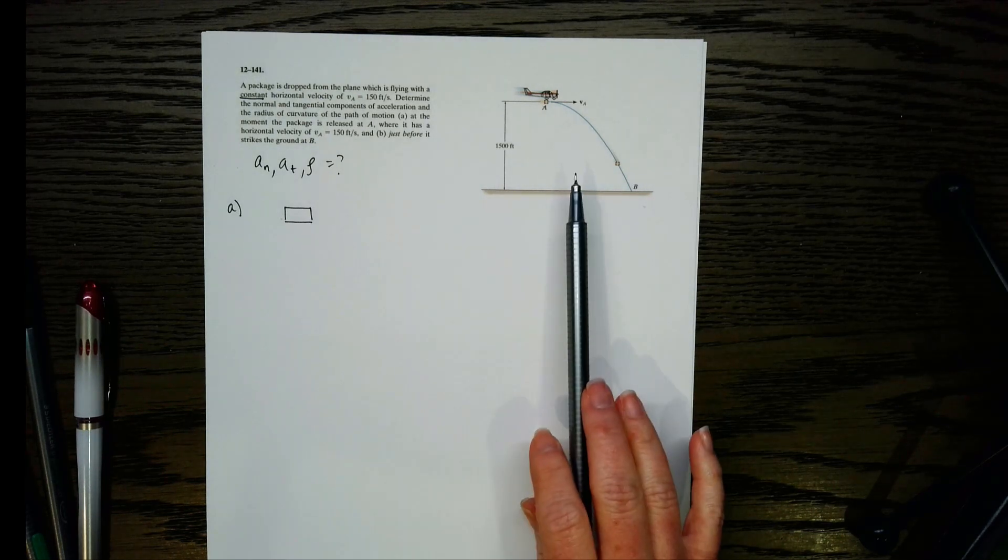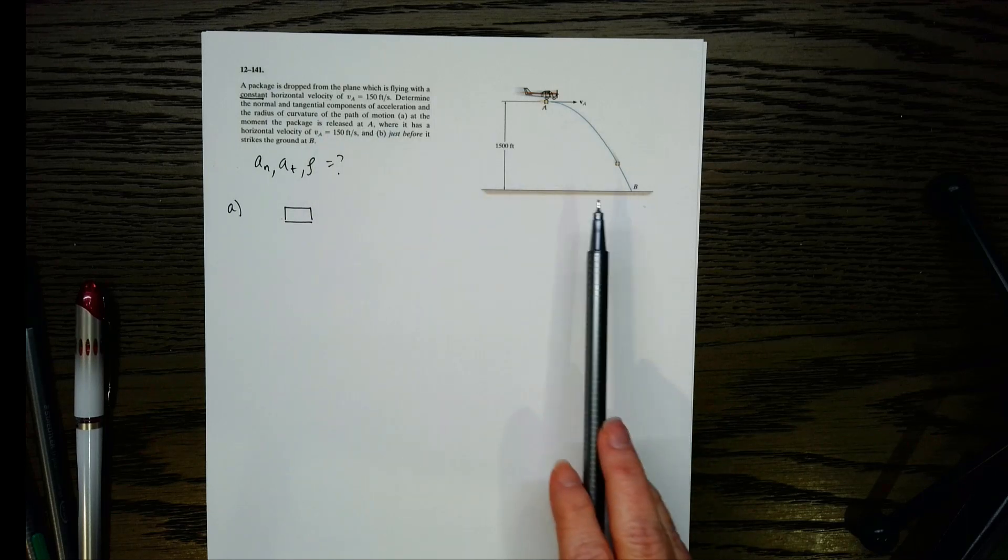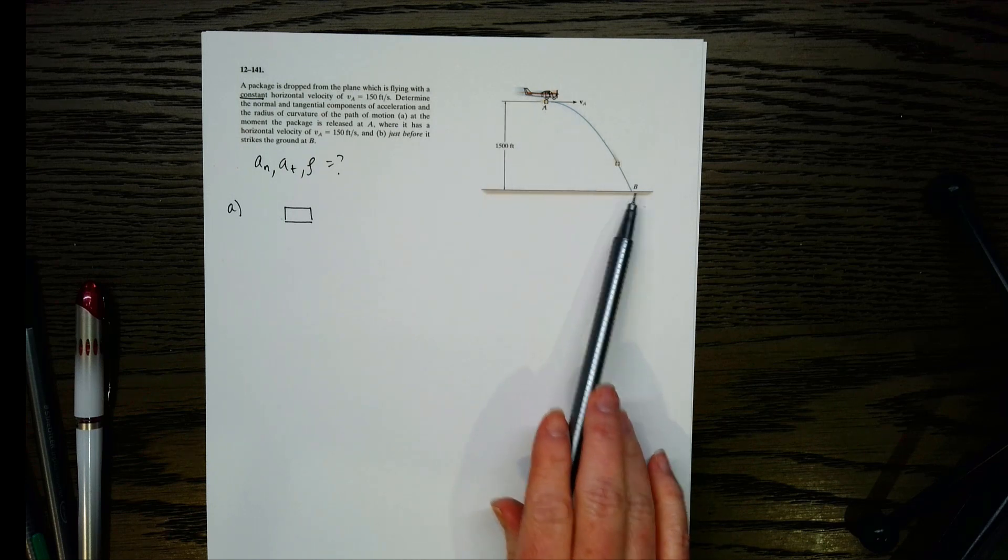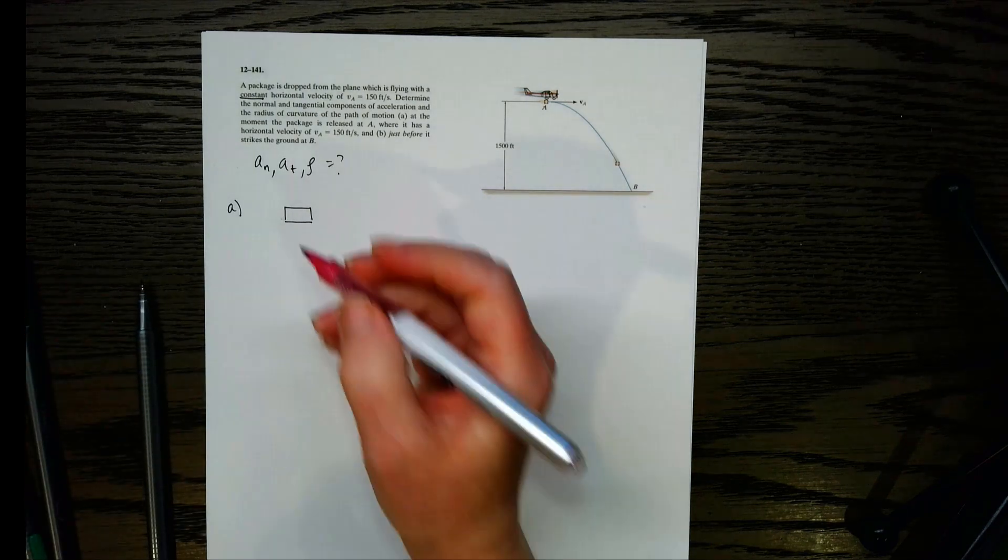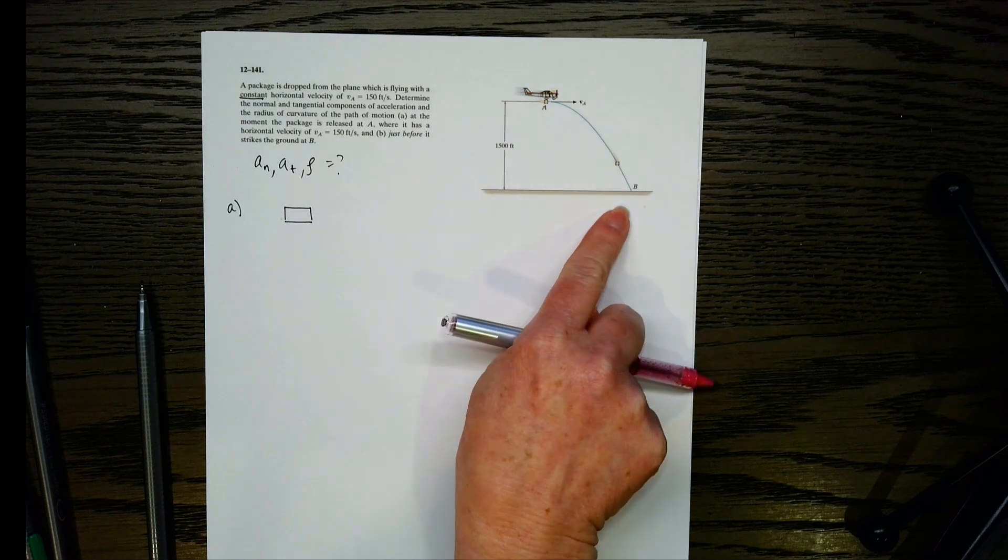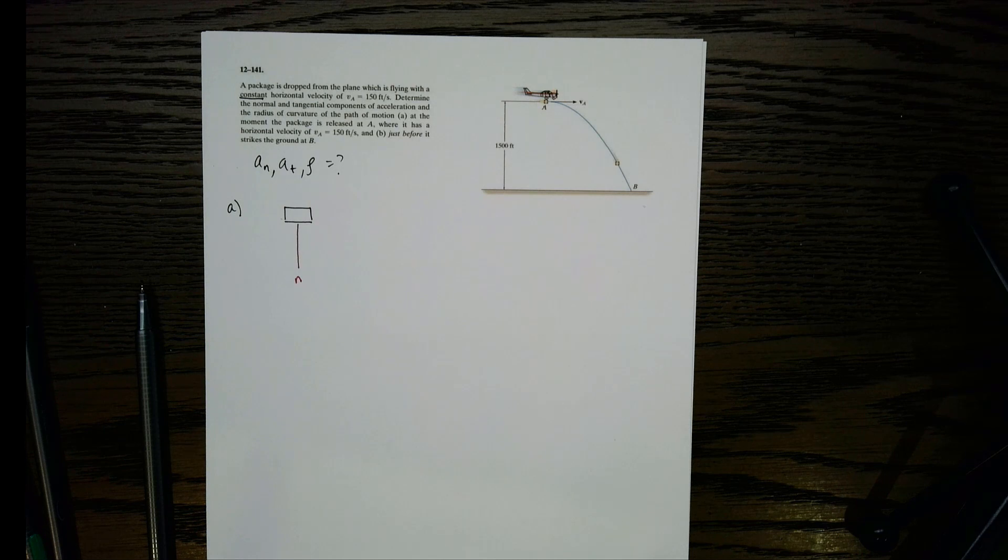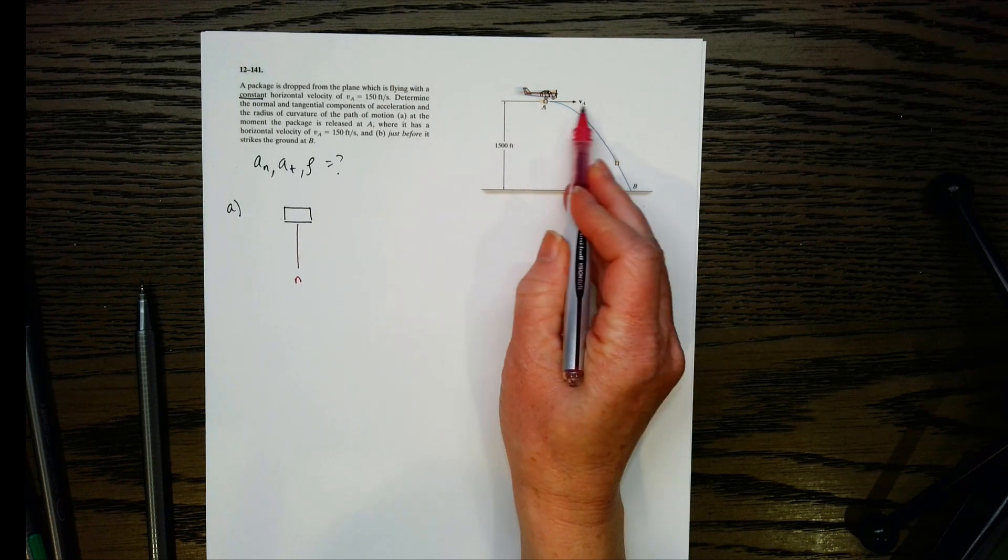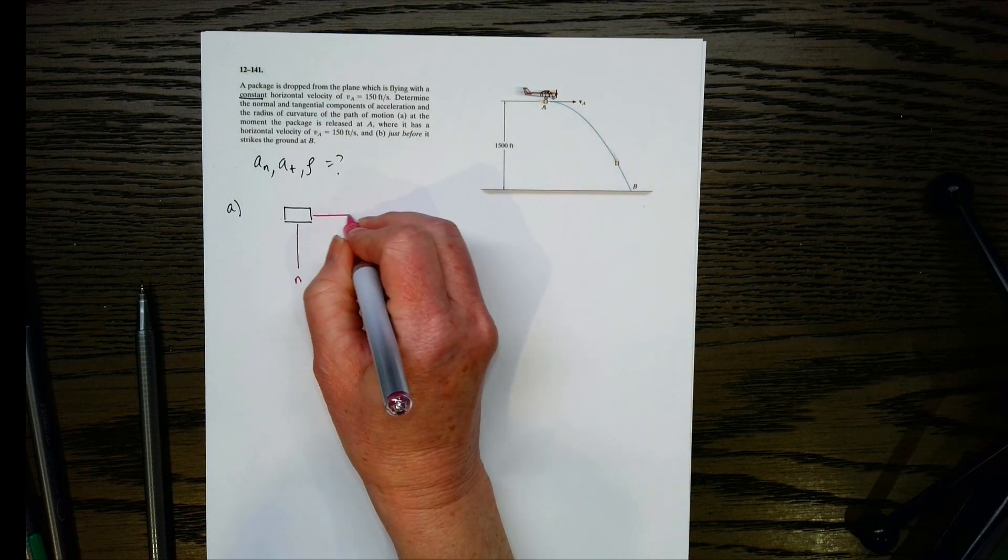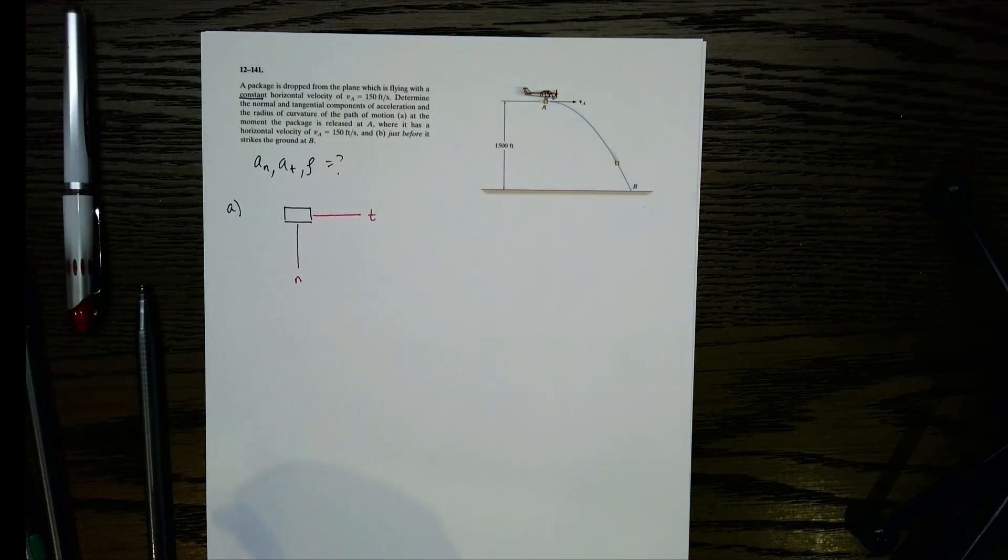Let's label our N and T system. I know by looking at this problem that I want to use N and T coordinates because it tells us to find the normal tangential, and we also have this curved path, so we know we can use N and T. The curvature is like this, so our N-axis would direct towards the center of curvature like that, and then the tangential is basically going to be tangent to the path, which is along this line of velocity. So T would be here.